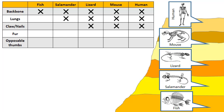Which of these five species have fur? That would be the mouse and the human. Mice and humans are mammals. And then which of these have an opposable thumb? That would be the human.